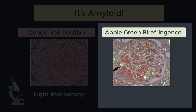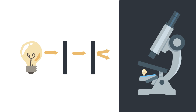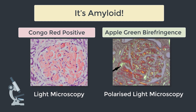Apple green birefringence is when we take that same biopsy sample but we use a different type of microscopy — polarized light microscopy. In normal light microscopy the microscope has a bulb emitting light in every direction. But in polarized light microscopy we apply filters along the path of that light to create two beams: filter one focuses the light source into a single beam, and filter two splits that into two beams. We then look at that same sample through this new microscope setup and we see this beautiful sparkly apple green birefringence — which is ironically very beautiful despite the fact that amyloid itself is far from beautiful when it affects our patients. So congo red positive and apple green birefringence: it's amyloid, it can only be amyloid.